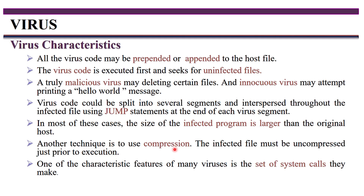In compression, attackers first check the size of the virus code, then compress the original file by that amount. The remaining space is filled with the virus code, so the total file size remains the same as the original. For example, if the original file is 20 MB and the virus is 5 MB, the original is compressed to 15 MB and the 5 MB virus code is added, keeping the file at 20 MB — avoiding antivirus detection.